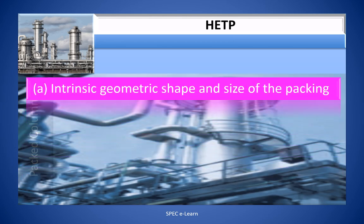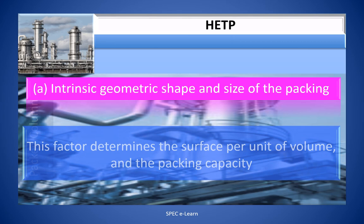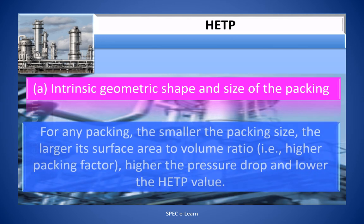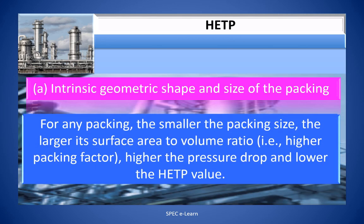Factor A: Intrinsic geometric shape and size of the packing. This factor determines surface area per unit volume and the packing capacity. For any packing, the smaller the packing size, the larger its surface area to volume ratio — that is, higher the packing factor, higher the pressure drop, and lower the HETP value.